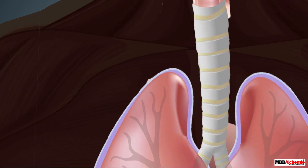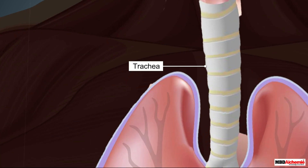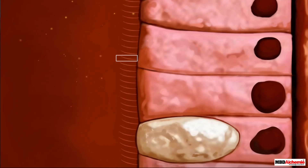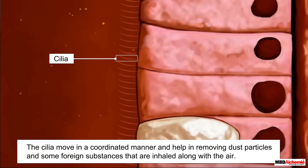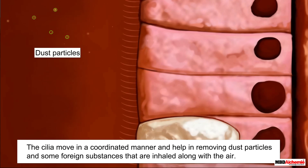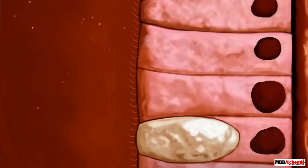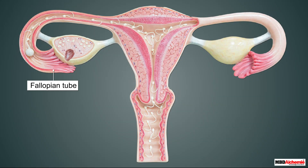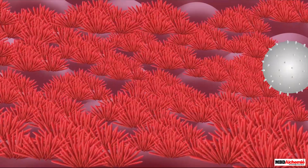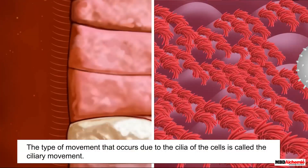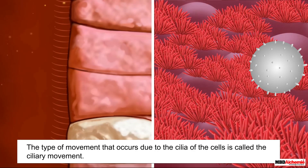One such movement occurs inside the trachea. The trachea is lined with cells containing small hair-like projections called cilia. These cilia move in a coordinated manner and help in removing dust particles and some foreign substances that are inhaled along with the air. A similar type of movement also occurs in the female fallopian tube, where it helps in the passage of ova.